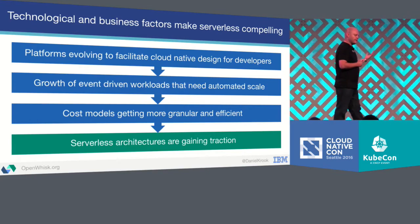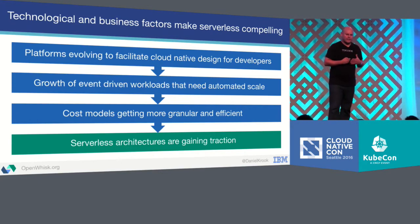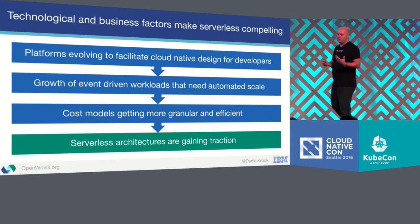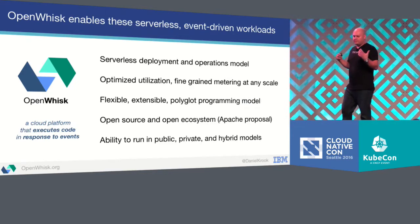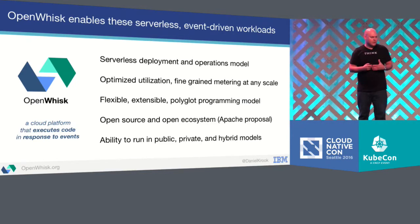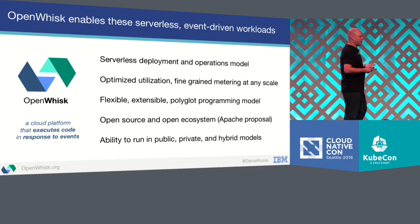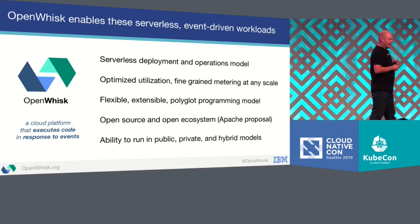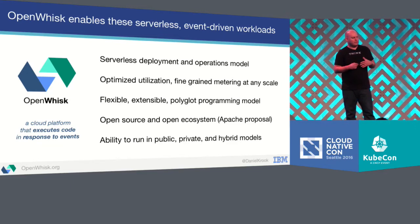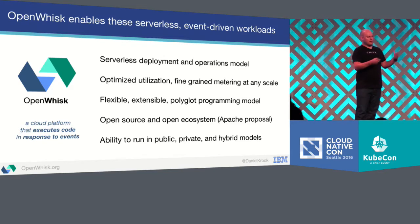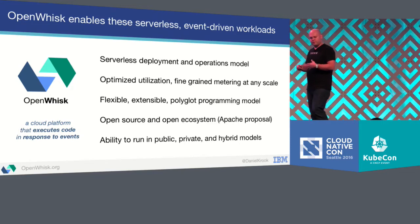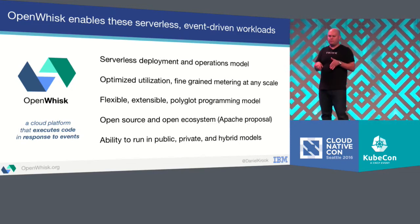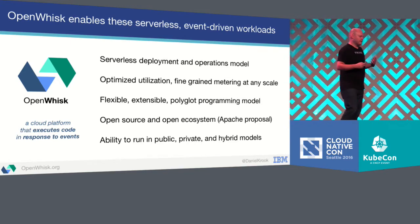Those technological trends are coming together and making it very compelling, and I expect this time next year there's going to be lots and lots more talk about serverless architectures. So how do developers actually get to implement serverless architectures? Well, IBM introduced an open-source project called OpenWhisk about eight months ago, and this provides a flexible platform for developers to deploy their functions as a service. It can be run either on a public cloud like Bluemix, on a local on-prem OpenStack cloud, or the upstream developers working on the open-source project can deploy OpenWhisk on their laptops. It's also designed to be very flexible.